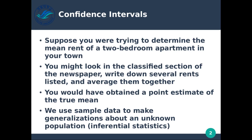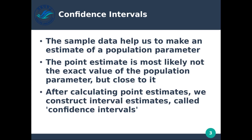This is very similar to using distributions like we did before. We use sample data to make generalizations about an unknown population. We sample a small portion of the population to make some generalization or guess about that unknown population — we want to know some attribute of it. We call this inferential statistics.